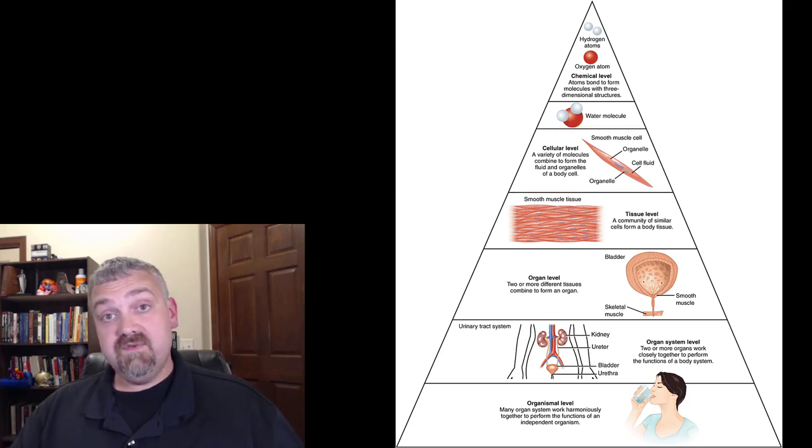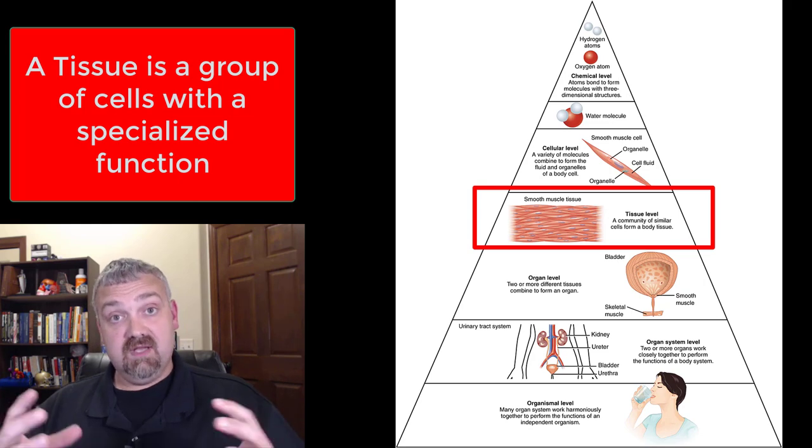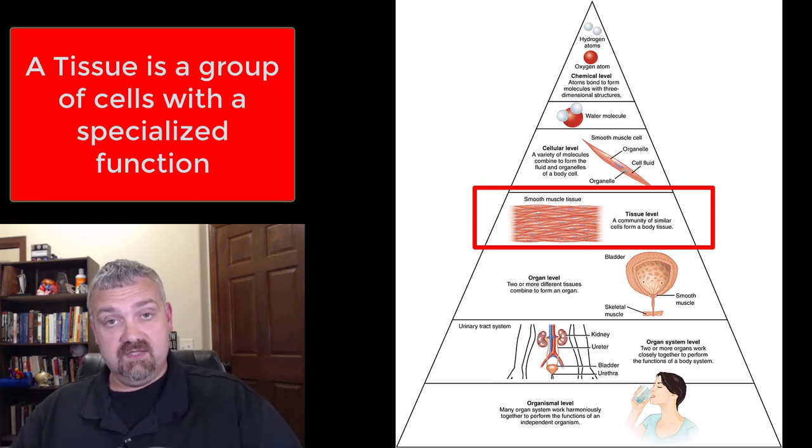Then when you put them together, we now move to the tissue level. So a tissue is a group of cells that have a specialized function. See how we're building on each other. We've built a cell, now we put cells together in tissues.